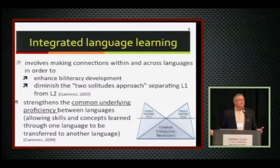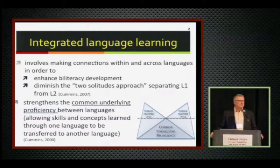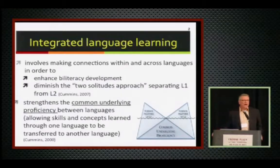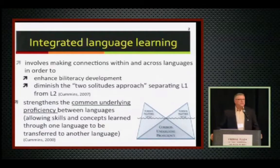One of the reasons L1/L2 connections are considered helpful for developing biliteracy has to do with Cummins' model — a rather simple model, but I like it. I also like the tree model we saw yesterday, but I'm going to stick to this iceberg model, where there's a common underlying proficiency where concepts and skills related to language can transfer from one skill to another. By reinforcing L1 and L2 connections, we really reinforce this common underlying proficiency. I'm going to give you an example from the research I'll be talking about today.